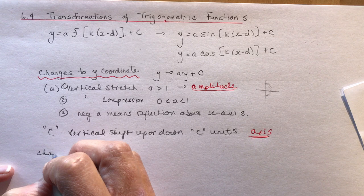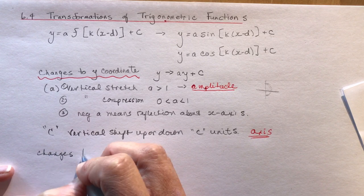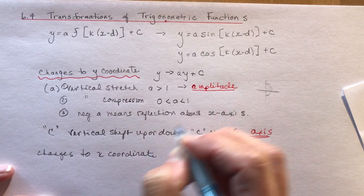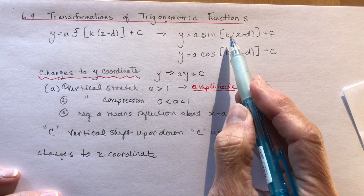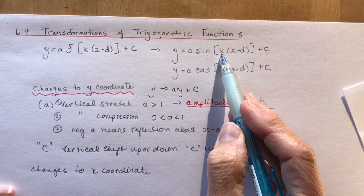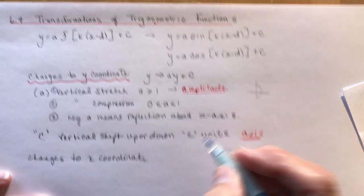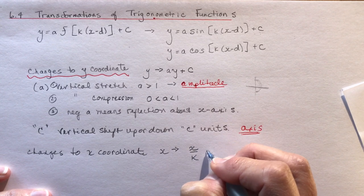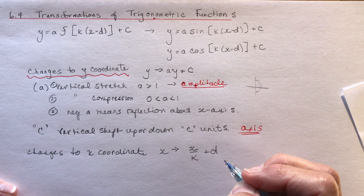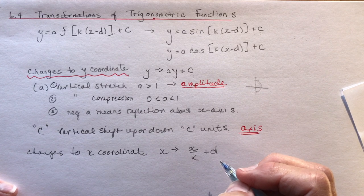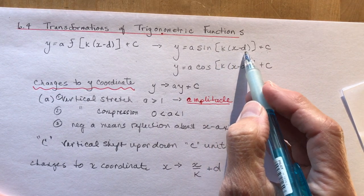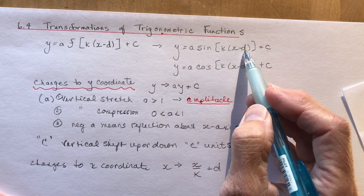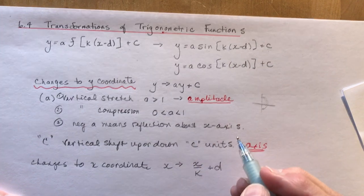Now let's look at changes to the x-coordinate, because everything's a little different in trig than in other transformations. In the mapping rule for x, you divide by k and add d — so x goes to x/k + d. As we saw in grade 11, x's are weird: it looks like times k minus d, but you divide by k and add d, or change the sign.